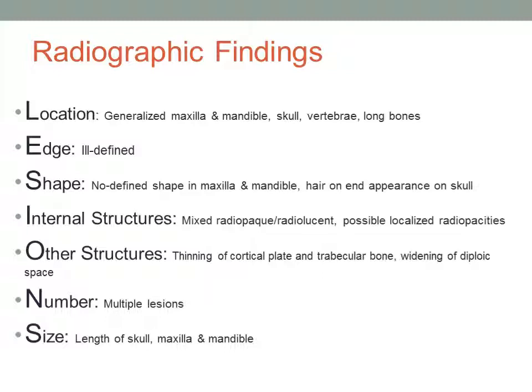Typically, there are multiple lesions in patients with sickle cell anemia, and they can be found throughout the skull, maxilla, and mandible.